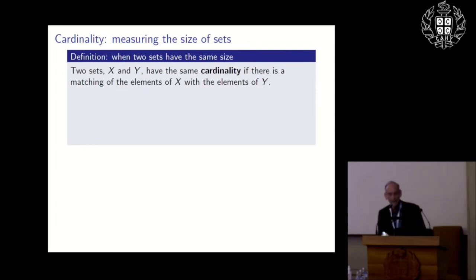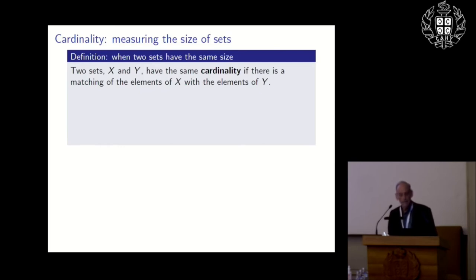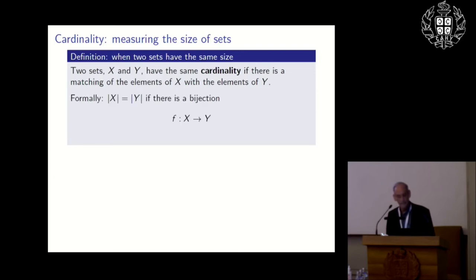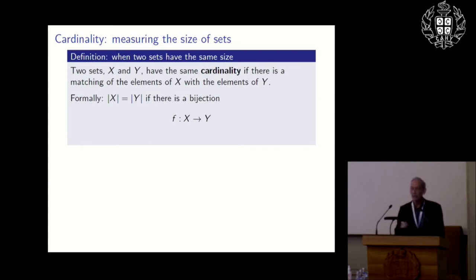Cardinality is measuring the size of sets. For finite sets that's a simple notion, but you have to be careful when dealing with the infinite. The intuition is correct: two sets X and Y have the same cardinality if there's a matching of the elements of X with the elements of Y — formally, if there's a bijection between them. Functions are sets, so this makes sense in set theory.